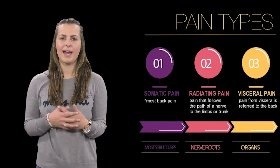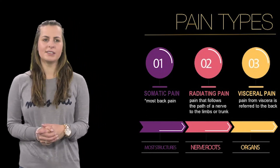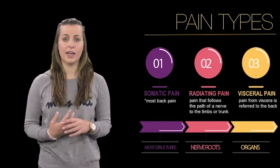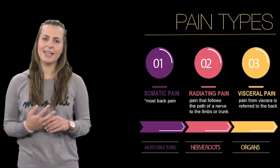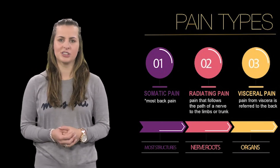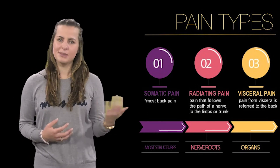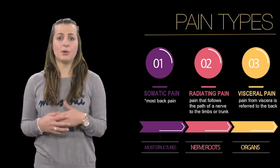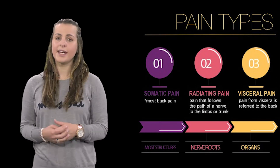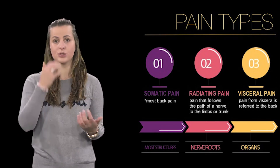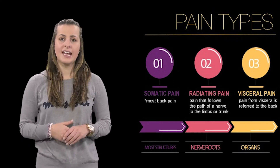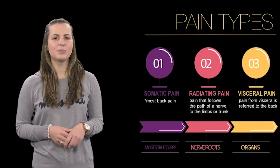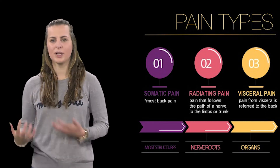Pain itself can be demonstrated in three categories. The first is somatic pain, which accounts for most back pain. Deep somatic pain is initiated by stimulation of nociceptors in ligaments, tendons, bones, blood vessels, fascia and muscles, and presents as a dull, aching, poorly localized pain. Examples include sprains and broken bones.